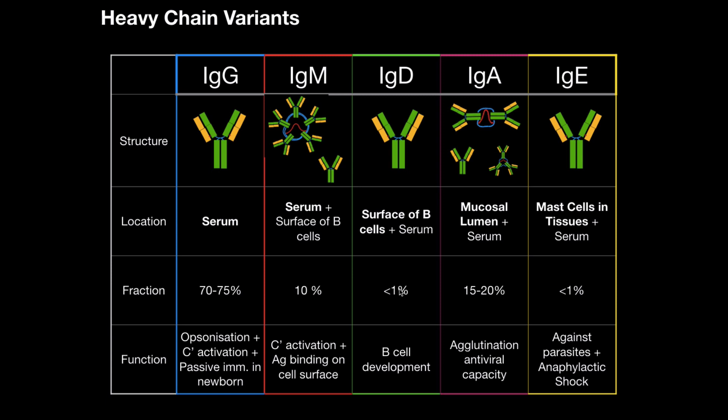IgA, mostly dimeric. You can find them as trimeric and monomeric, but they exist mostly in the mucosal lumen, and also some of them in the serum, 15% to 20%. Their role is to protect you from microorganisms by agglutinating the microorganisms at the lumen of the mucosal surface.